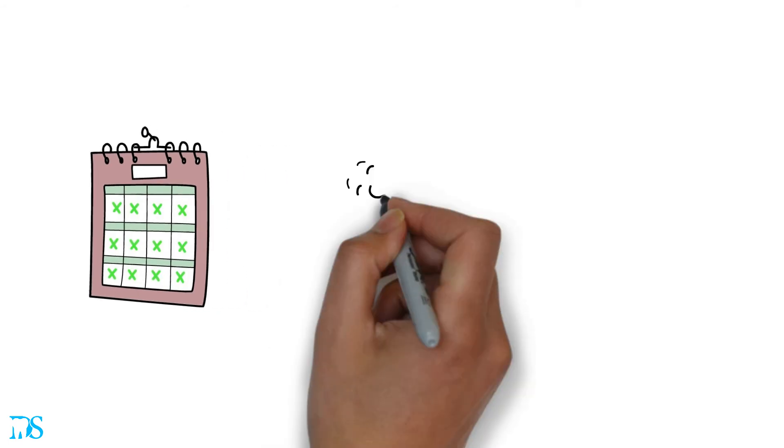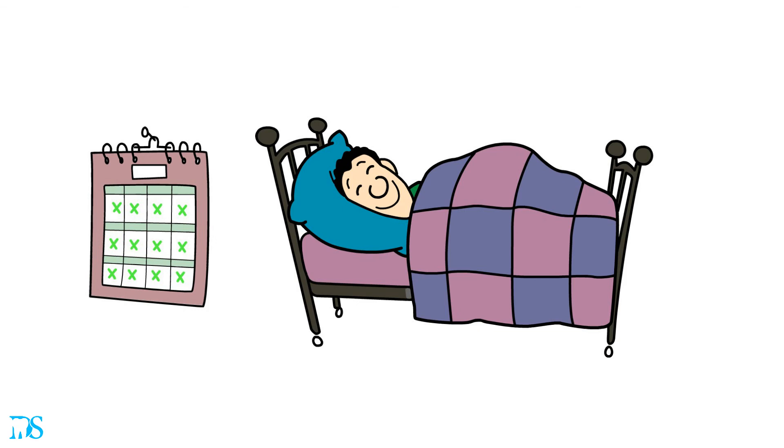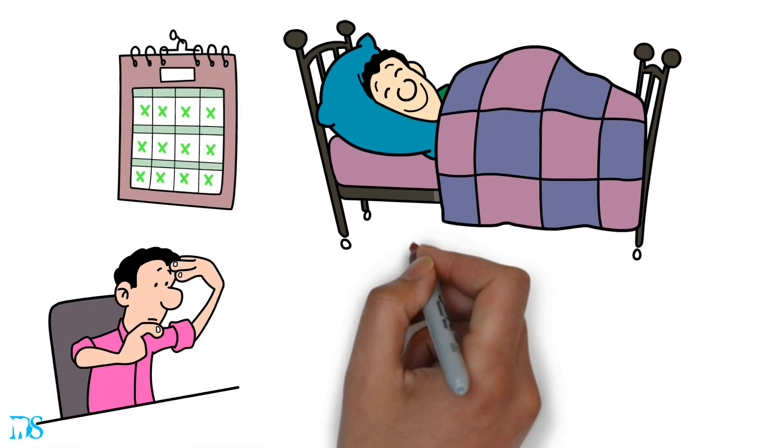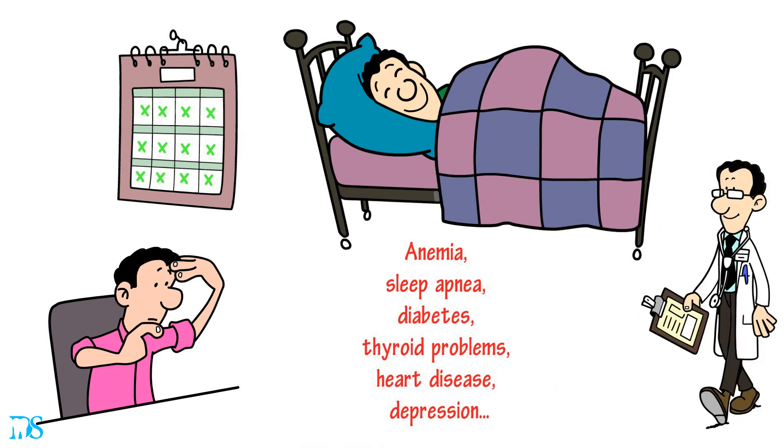Finally, you may just need to stick to a consistent sleep schedule. As boring as it sounds, waking up and going to bed at the same time, even on the weekends, can help regulate your body's clock and help you stay asleep throughout the night. If you feel like you've tried everything and nothing seems to help, you may have an underlying medical condition and should talk to your physician.